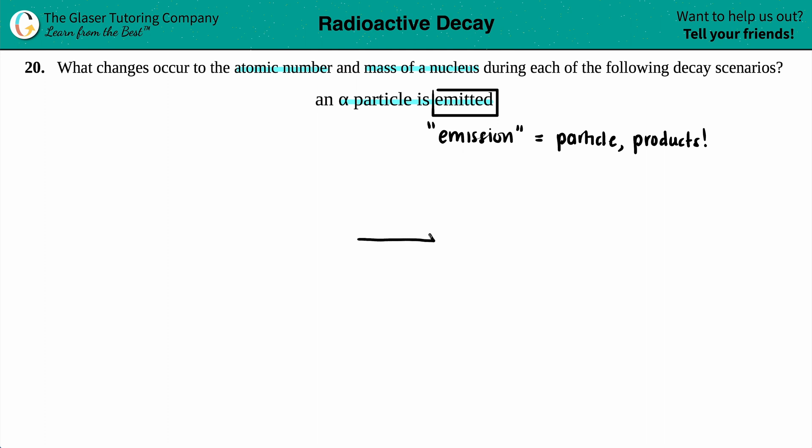So we have our alpha particle, but now we need to know exactly what an alpha particle is. Well, let's use our nuclei notation. An alpha particle is secretly a helium. Helium always has an atomic number of two, so that two goes on the bottom. And specifically, if you're talking about an alpha particle, you're talking about the atomic mass that has a four. So four on top, two on the bottom. It's a helium. This should be memorized.